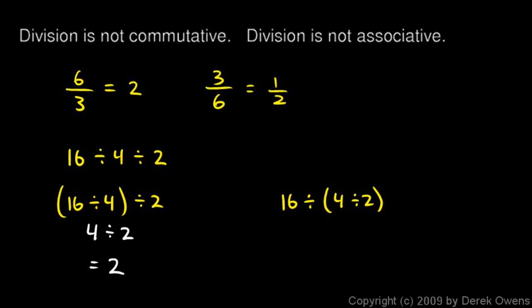Now, over here, we have 16 divided by this thing. And this thing is 4 divided by 2. That thing is simply 2. 4 divided by 2 is just 2. So we have 16 divided by 2. Let's write it like that. 16 divided by 2. And 16 divided by 2 is 8.